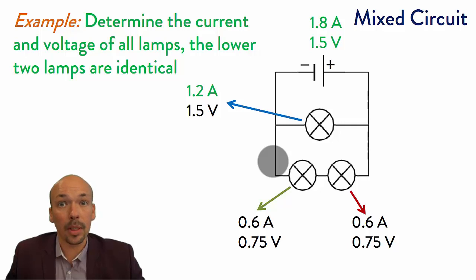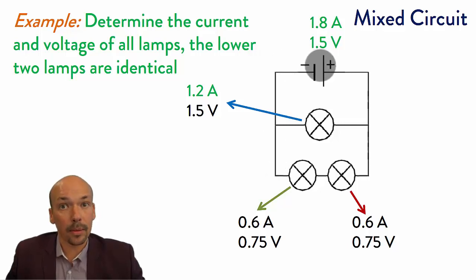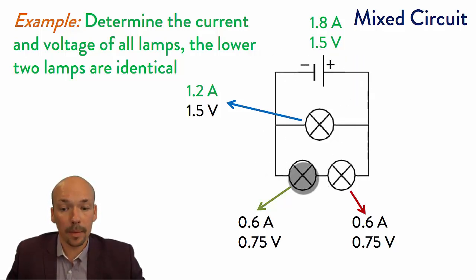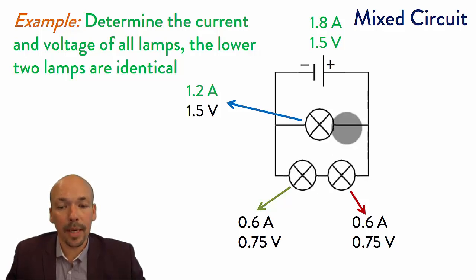The amperes return empty to the battery. This is how you work with series and parallel in a mixed circuit.